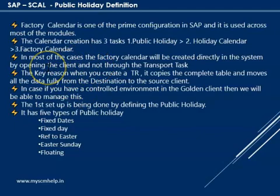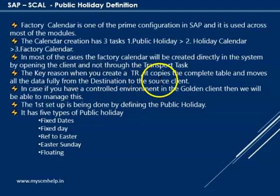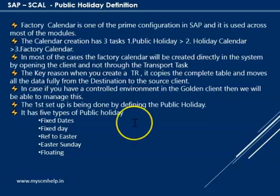In most cases the factory calendar is created directly in the system by opening the client. You cannot create it without opening the client, and it is not done through the transport request. When you create through a transport request, it copies the complete table — not just the changes you made, but the complete repository — and moves it from one client to another. Imagine if five people are working in one project and made some changes for testing in your golden client; you would not know all those things. To avoid such issues, generally people follow the direct creation approach, though some clients do it in a controlled fashion.